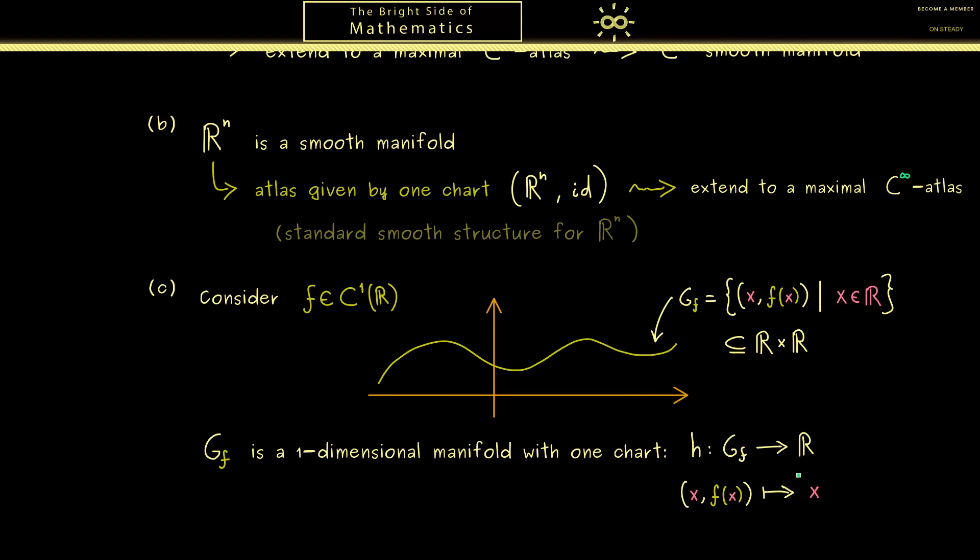Indeed, here you should immediately see the well-defined inverse of h. And now as before, you know this is what we can extend to a smooth structure. And then in this sense the graph G_f is a smooth manifold. However, here you should see this smooth manifold is embedded in another smooth manifold, namely inside R^2 with the standard smooth structure. And in fact, this connection is what we call submanifolds.